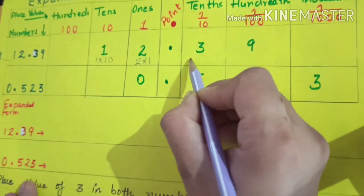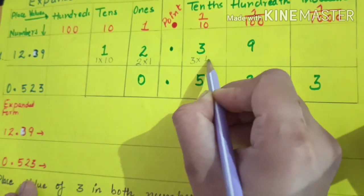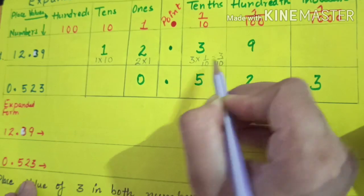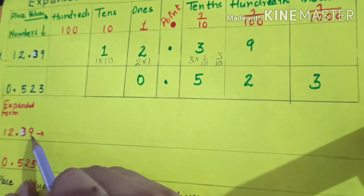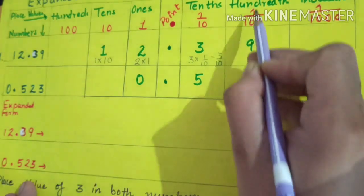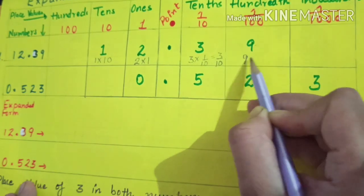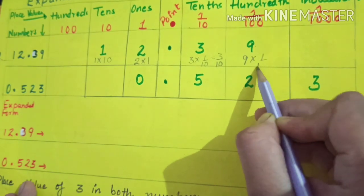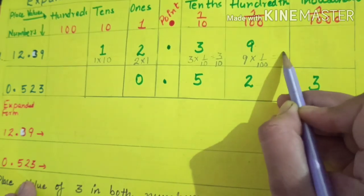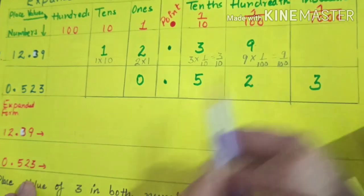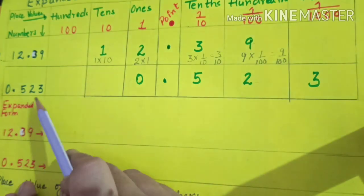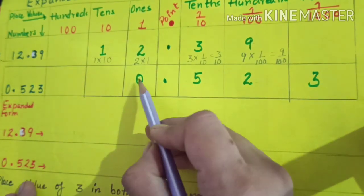The place value of three will be three multiplied by one over ten, which equals three over ten, or three-tenths. Nine is at the hundredths place, so the place value of nine will be nine multiplied by one over one hundred, which equals nine over one hundred, or nine-hundredths. Similarly for 0.523.